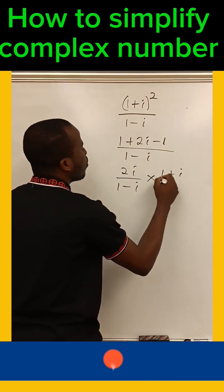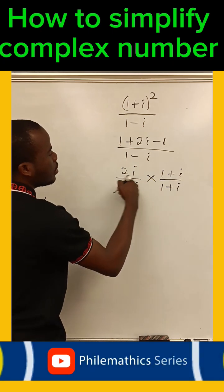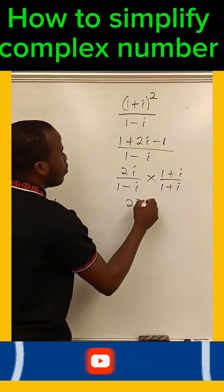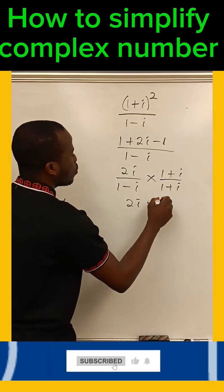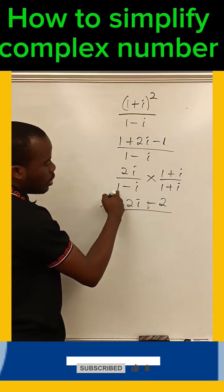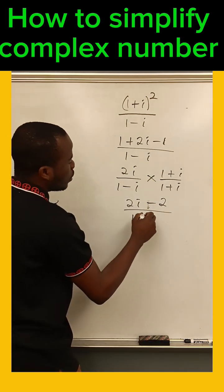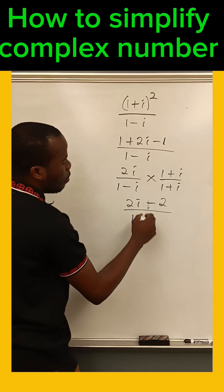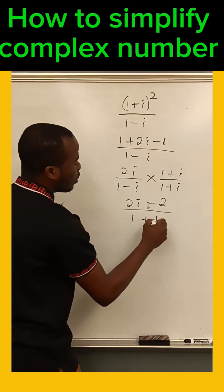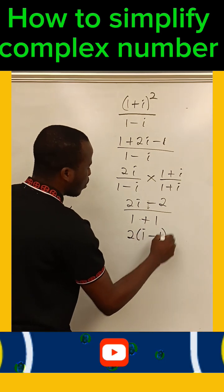We multiply by one plus i over one plus i. So the numerator becomes 2i times one plus i, which gives us 2i minus 2. The denominator: one squared is one, i squared is minus one, so minus minus one is plus one, giving us two. So we have 2i minus 2 over two.